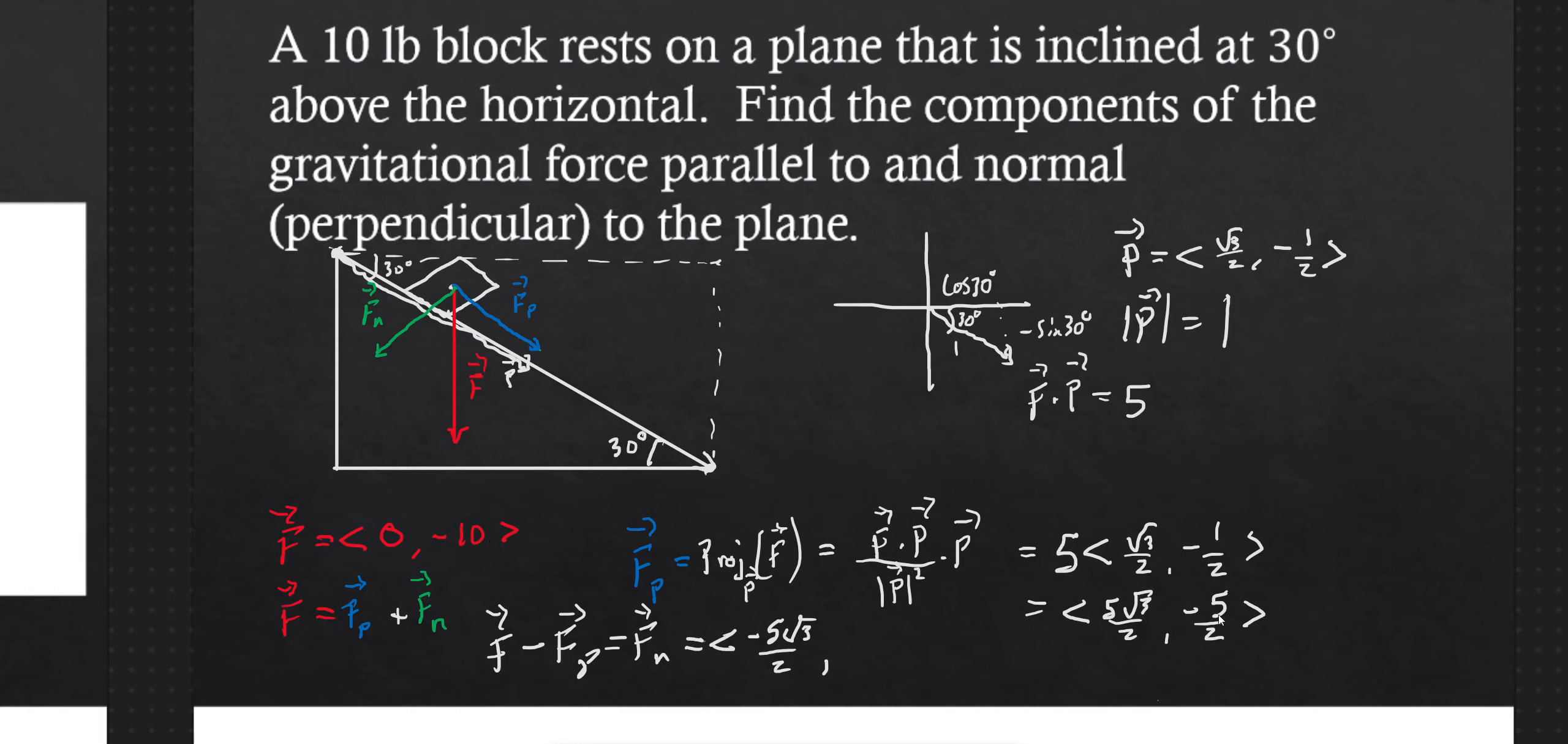So that's negative 10 minus negative 5 halves. So that's 10. So that's 20 halves. Sorry, negative 20 halves plus 5 halves. That's negative 15 halves is my Fn. So cool.